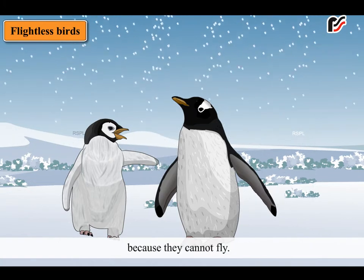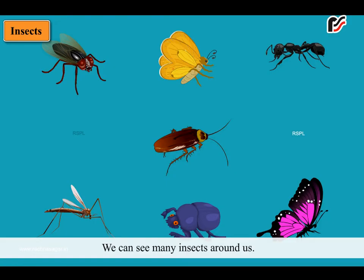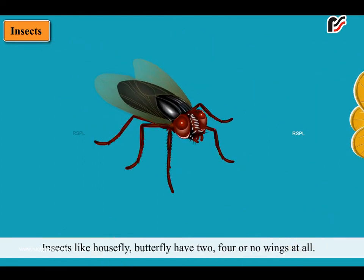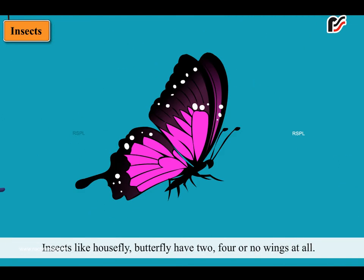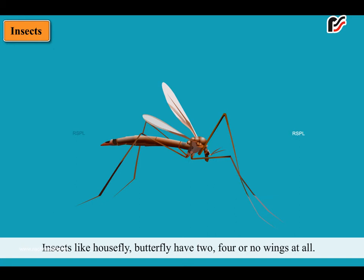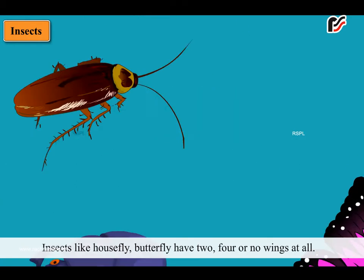Some birds such as ostrich, who runs very fast, and penguins, who live in cold places, are called flightless birds because they cannot fly. We can see many insects around us. Insects like housefly and butterfly have two, four or no wings at all.